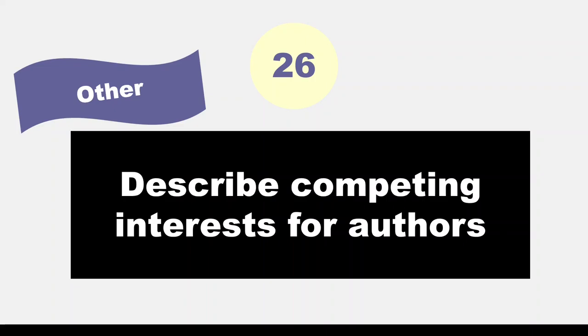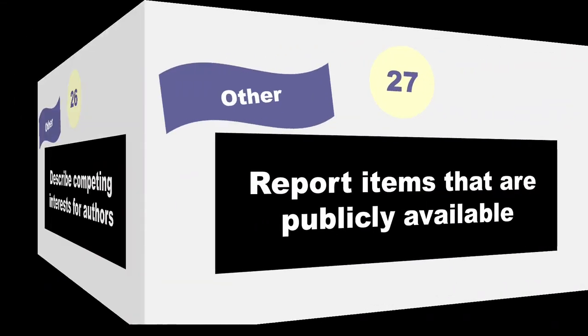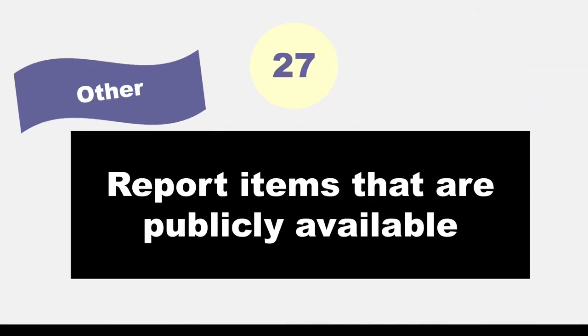And finally, the last item, item 27. Item 27 asks authors to report which of the following are publicly available and where they can be found: template data collection forms, data extracted from included studies, data used for all analysis, analytic code, and any other materials used in the review.